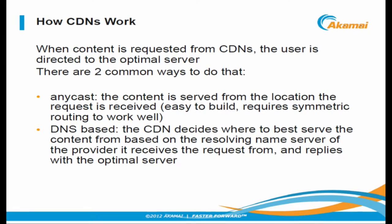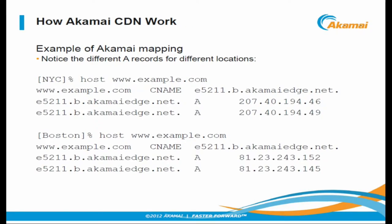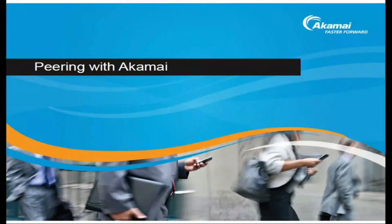There are two ways CDNs work. We use this map-based system. The other popular mechanism is anycast, where instead of intervening in the DNS request, anycast CDNs allow BGP to route the user to the closest server. Users querying a DNS-based CDN get different A and AAAA records depending on where they're coming from. For example, a user in New York City gets A records starting with 207, but in Boston gets A records in the 81 net — literally mapped to two different Akamai sites.